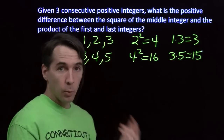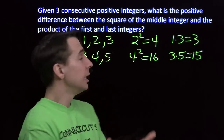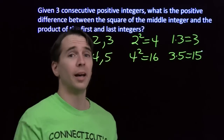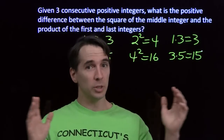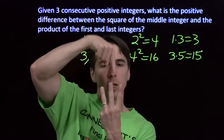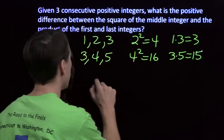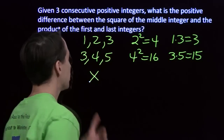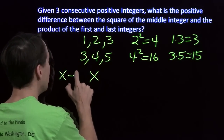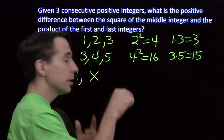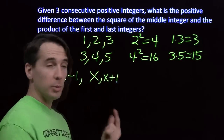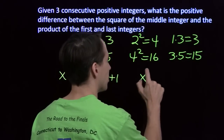We know what to use here — we've got a word problem, so we're going to break out a variable. Now which of these numbers — first, second, or third — are we going to put the variable on? When I have a problem with equally spaced integers and there's an odd number of integers, I like to put the variable on the middle number. So I'm going to assign the variable to the middle number and call it x. The first number is x minus 1, the last number is x plus 1, and the square of the middle integer is just x squared.